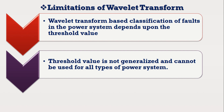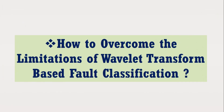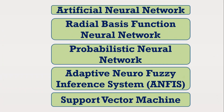Furthermore, it was also discussed that this threshold value is not generalized and cannot be used for all types of Power System. Therefore, to overcome this limitation, Computational Intelligence-based techniques such as Artificial Neural Network and its various types can be used.